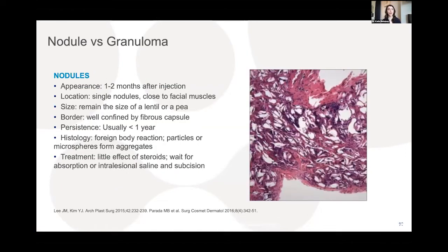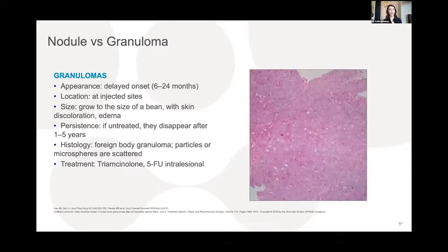Nodules appear one to two months post-injection, are typically single, small (lentil- to pea-sized), with a well-confined fibrous capsule, and usually resolve within a year. Histology shows a foreign body reaction with microspheres from aggregates. Granulomas are very uncommon, with delayed onset of six to 24 months, can grow to bean-sized, and if untreated eventually disappear; they can be treated with intralesional triamcinolone or 5-fluorouracil.